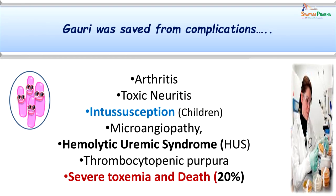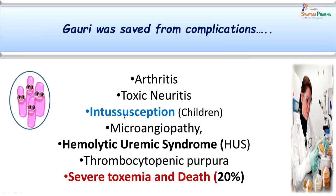By following the right lab diagnostic approach, we could save Gowri from potentially fatal complications — especially known to occur in children below 5 years — including arthritis, severe toxemia, and death. One important complication in children is intussusception, where a paralyzed segment of intestine is taken over by peristaltic movement of surrounding intestine. Microangiopathy, especially in the kidney, results in hemolytic uremic syndrome (HUS), which can also be produced by Shiga toxin-producing E. coli.